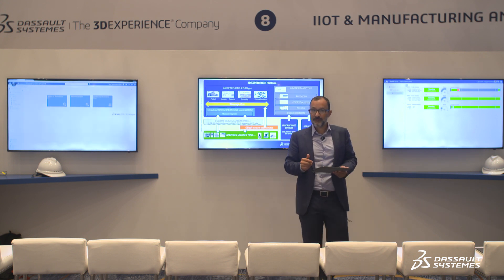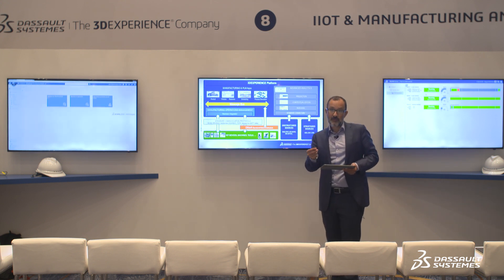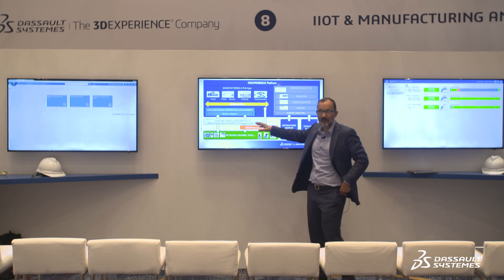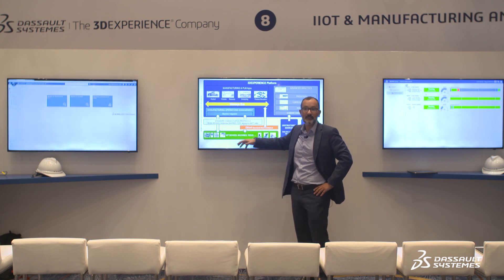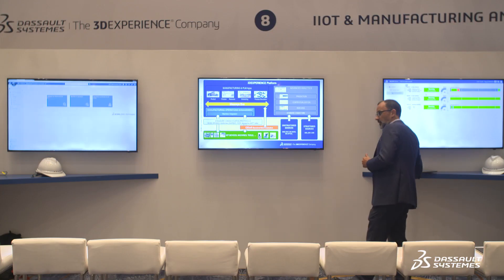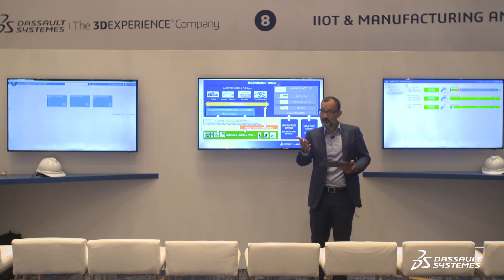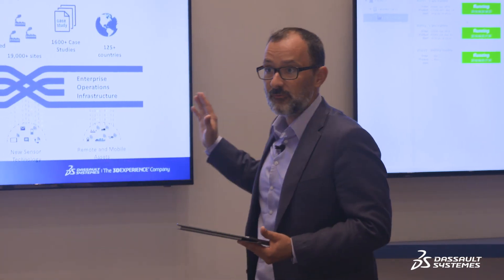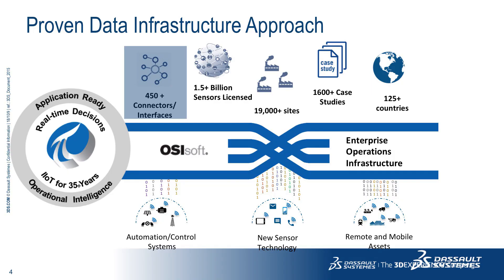First things first — you need the right data at the right time at the right place. Within the 3DEXPERIENCE platform, DELMIA APRISO, we have the ability to connect directly to devices using standard communication protocols: OPC, MQTT, Kafka, and others. For high-throughput data such as time series — thousands of parameters every millisecond — we have a partnership with OSIsoft, which has the right connectivity and data infrastructure stacks for handling this type of data.